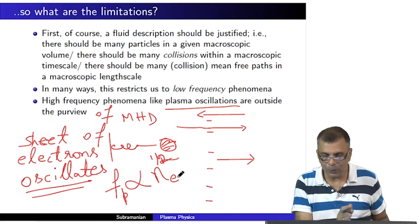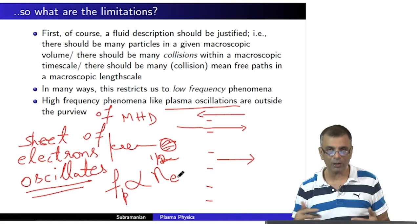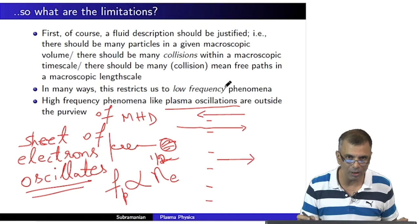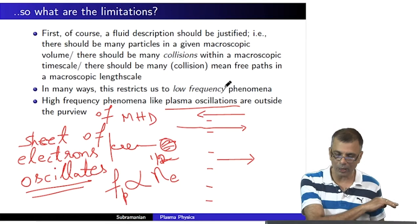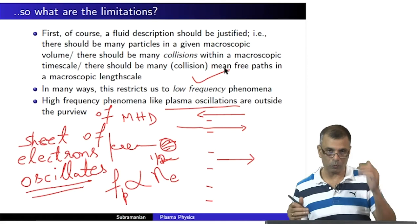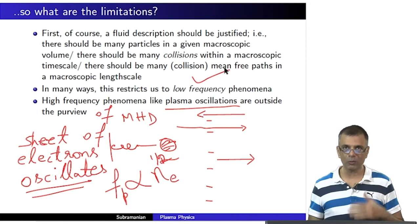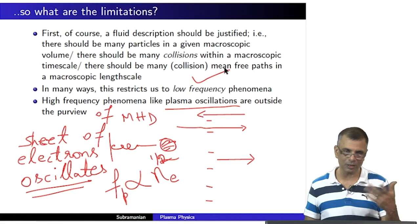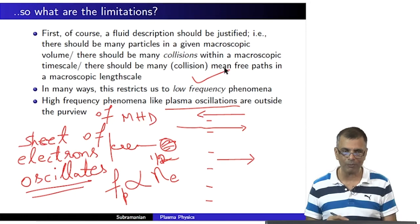The frequency of plasma oscillations is proportional to the one-half power of the electron density. These are high-frequency phenomena. MHD cannot deal with — cannot resolve — plasma oscillations. The temporal frequencies at which magnetohydrodynamics is applicable are well below the plasma oscillation frequency, so MHD is blind to plasma oscillations. We are really restricted only to low-frequency phenomena — low frequency with respect to the frequency of plasma oscillations.